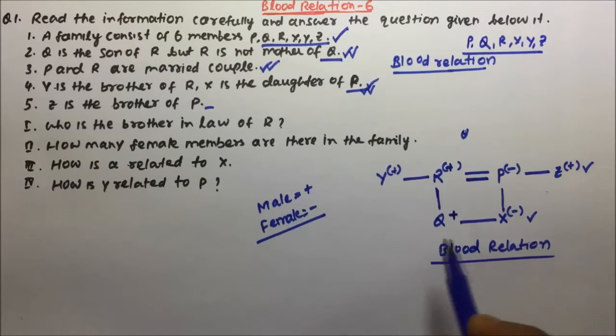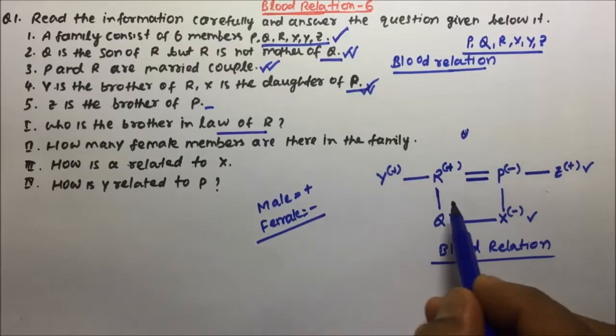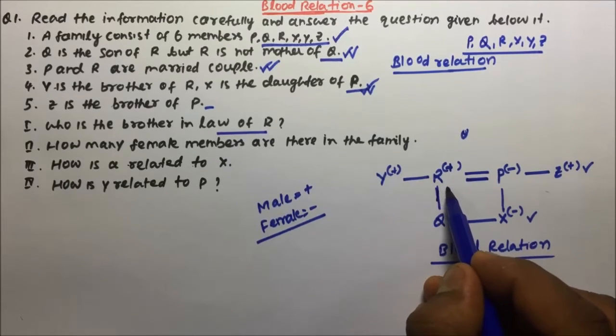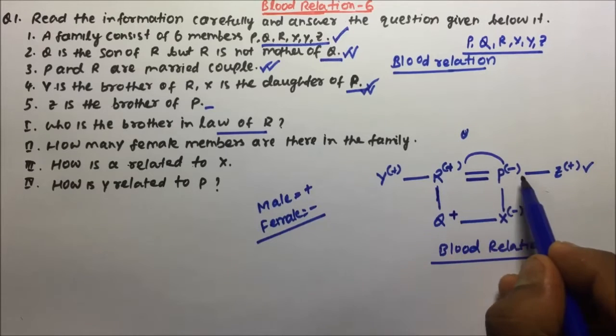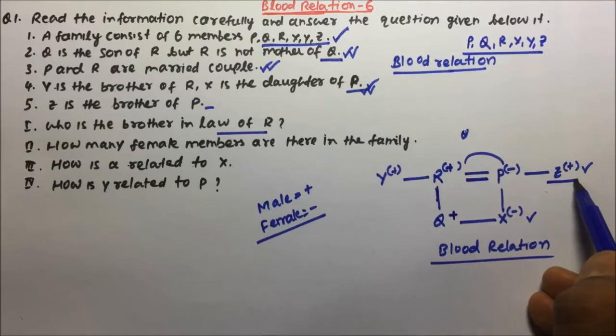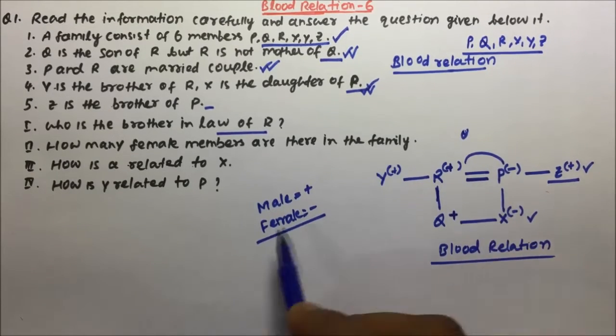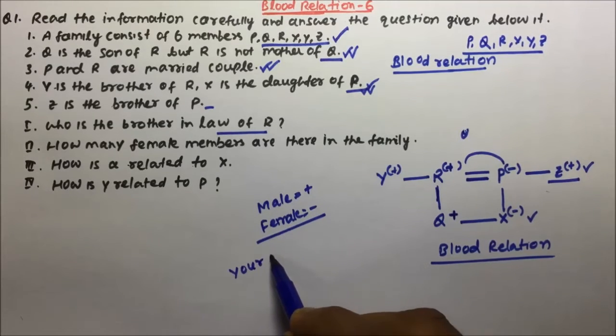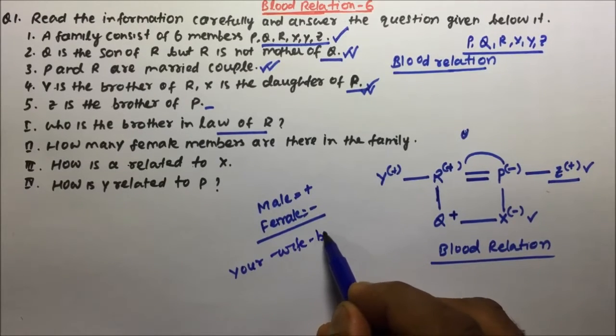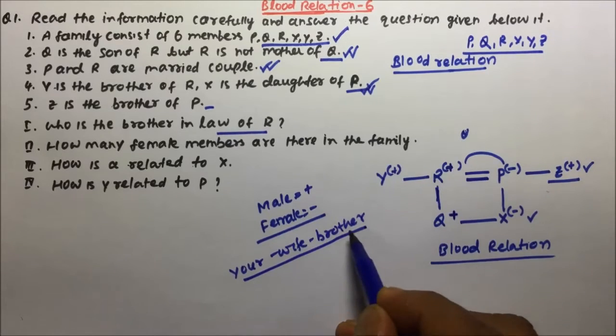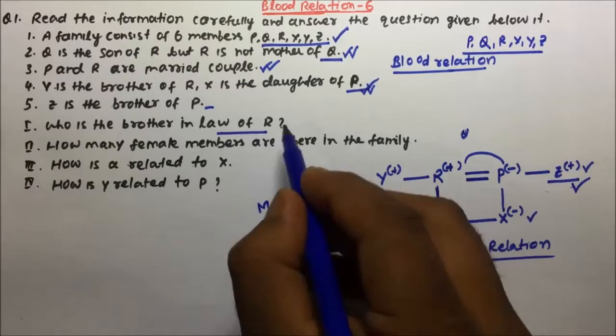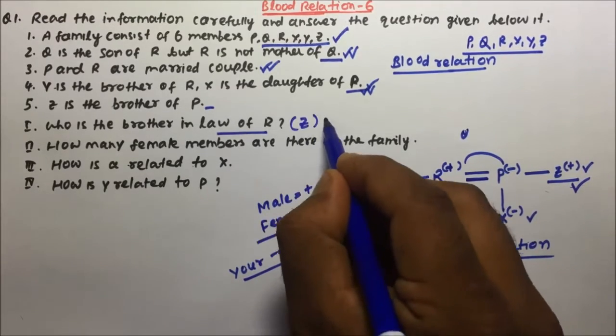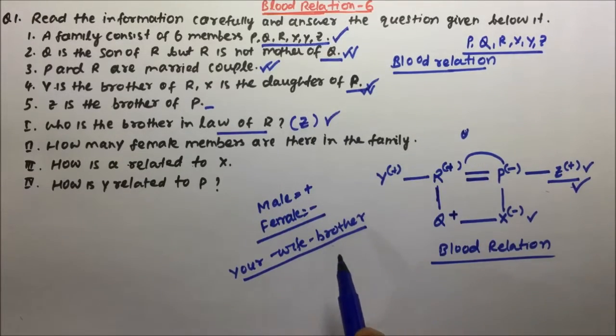What are the questions? Let's see. Who is the brother-in-law of R? So for R who is the brother-in-law? Now R's wife is P and R's wife's brother is Z. That means your wife's brother will be nothing but your brother-in-law. So Z will be the brother-in-law of R. So question number one is answered.